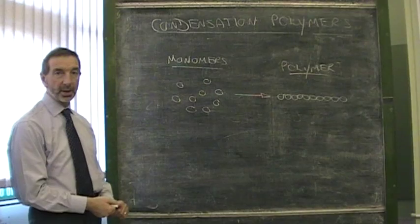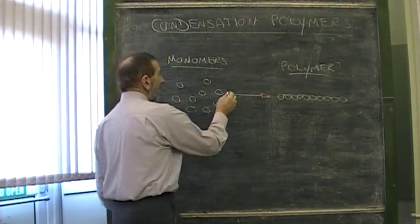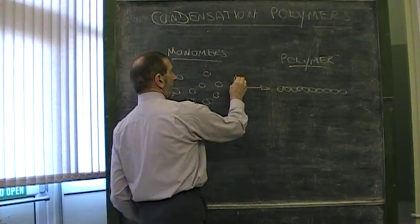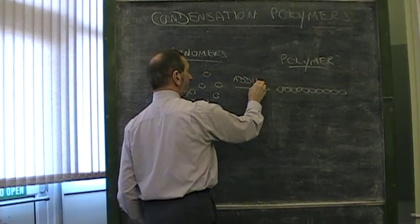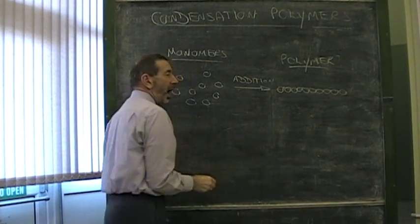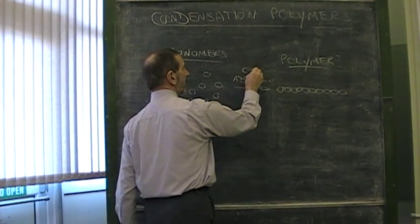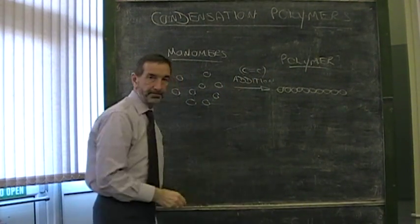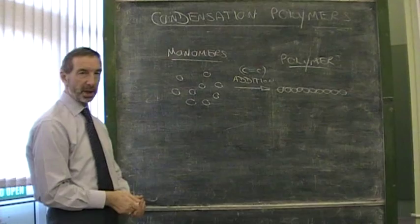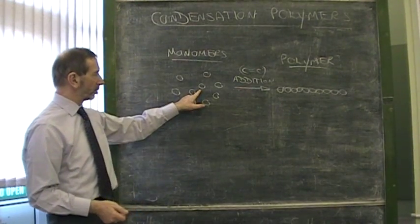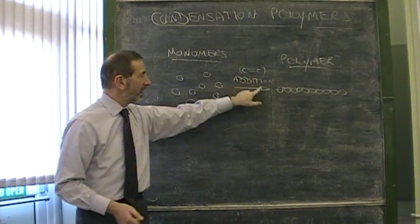And the answer is, there are two methods. Monomers can join together by a process called addition. Addition is when these have carbon to carbon double bonds present. So addition polymers are formed when the little molecules burst the double bonds and join together.